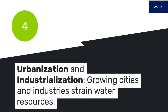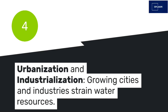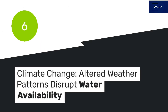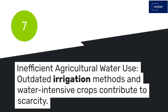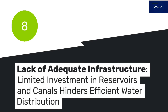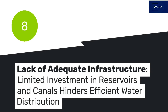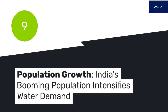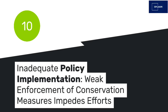3. Inefficient water management — wasteful irrigation, inadequate storage, and maintenance contribute to scarcity. 4. Urbanization and industrialization — growing cities and industries strain water resources. 5. Pollution of water sources — polluted rivers and lakes worsen water quality and quantity. 6. Climate change — altered weather patterns disrupt water availability. 7. Inefficient agricultural water use — outdated irrigation methods and water-intensive crops contribute to scarcity. 8. Lack of adequate infrastructure — limited investment in reservoirs and canals hinders efficient water distribution. 9. Population growth — India's burgeoning population intensifies water demand. 10. Inadequate policy implementation — weak enforcement of conservation measures impedes efforts.